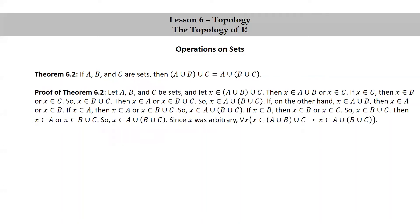Since X was arbitrary, we showed that for all X, X in (A union B) union C implies that X is in A union (B union C). Therefore, we have shown that the left-hand side, (A union B) union C, is a subset of the right-hand side, A union (B union C).